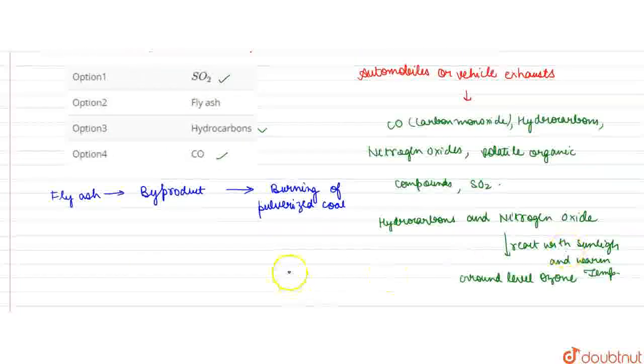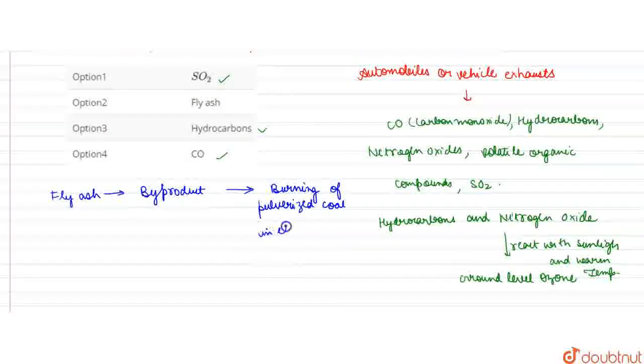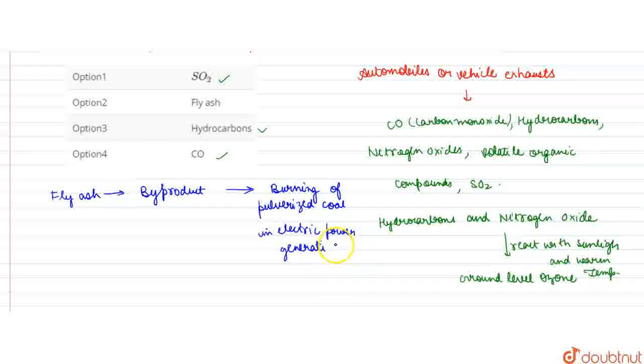In electric power plants where you have power generation, pulverized coal is burned so that we can generate electric power.